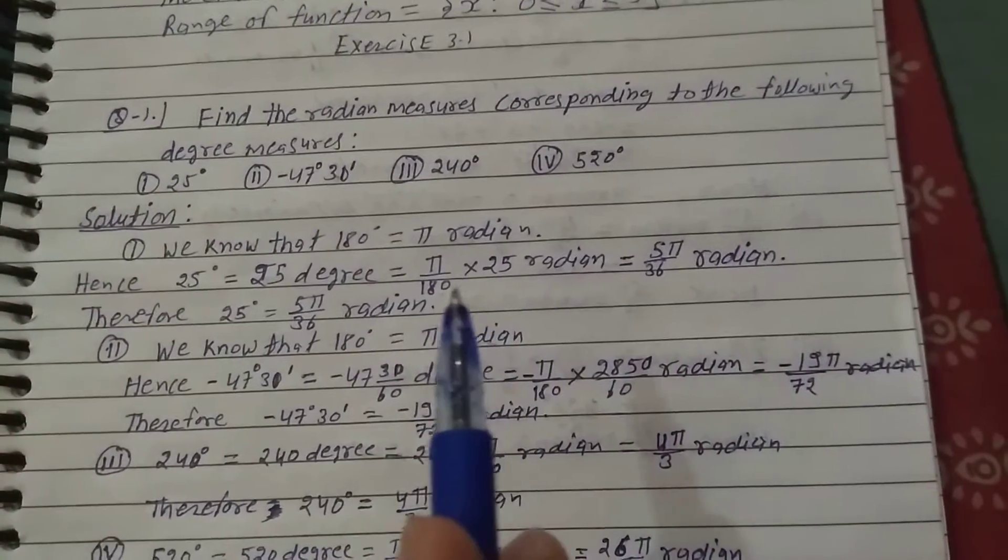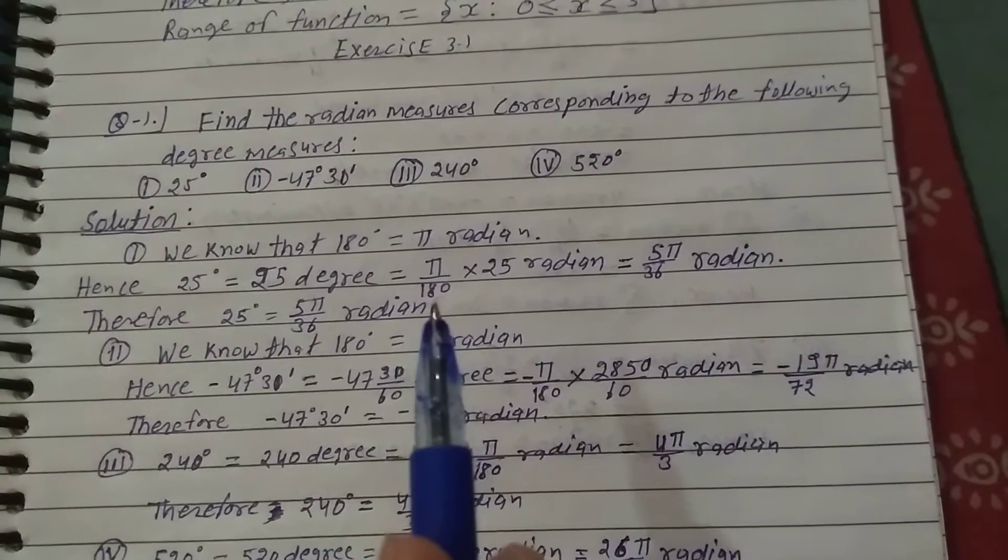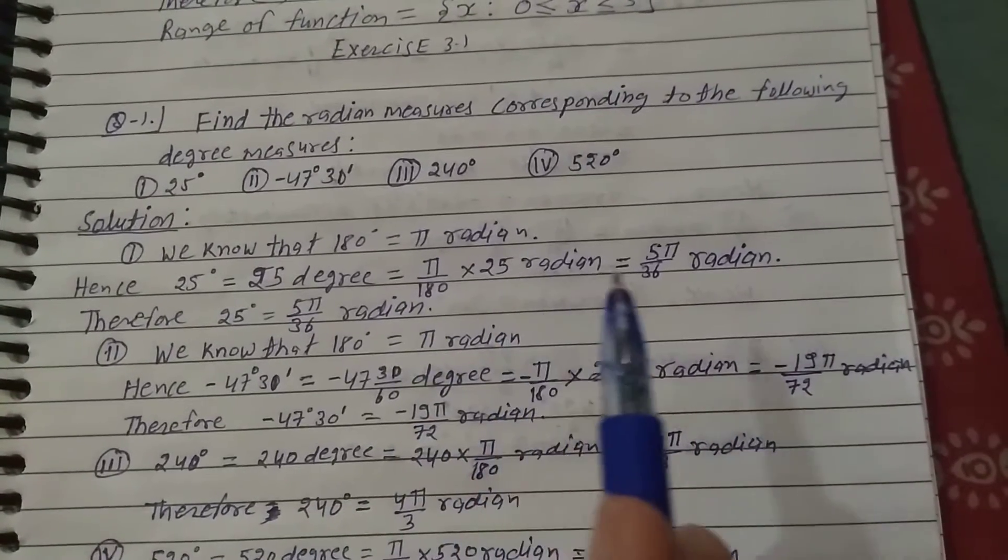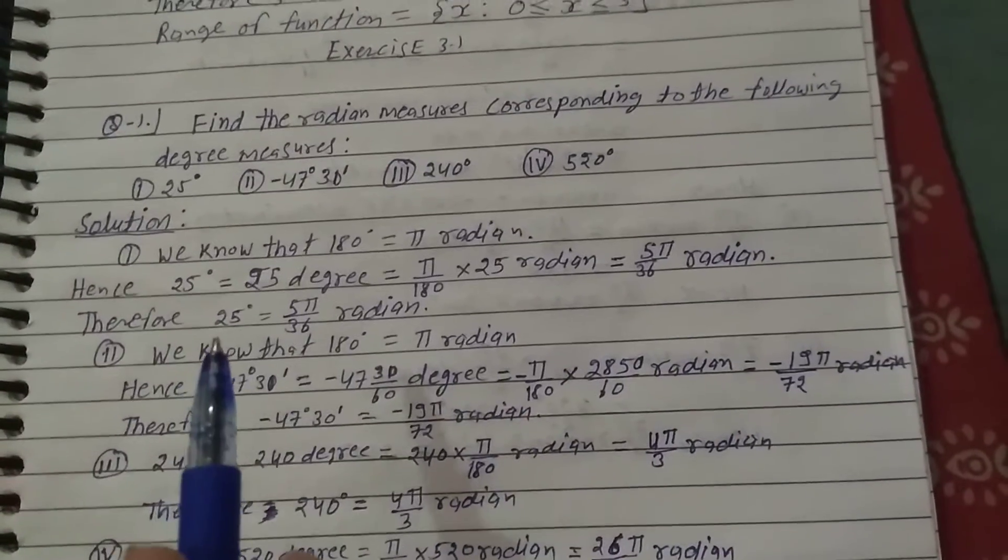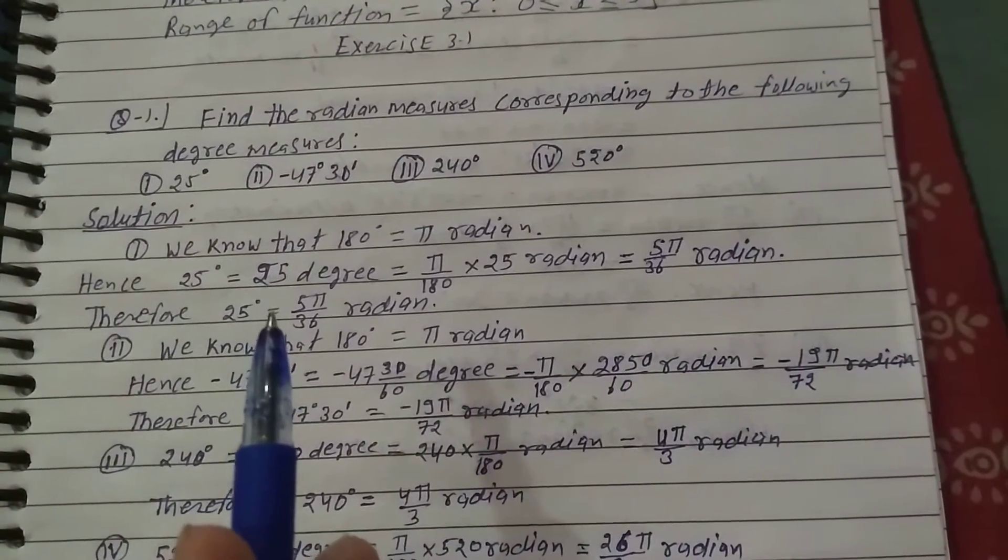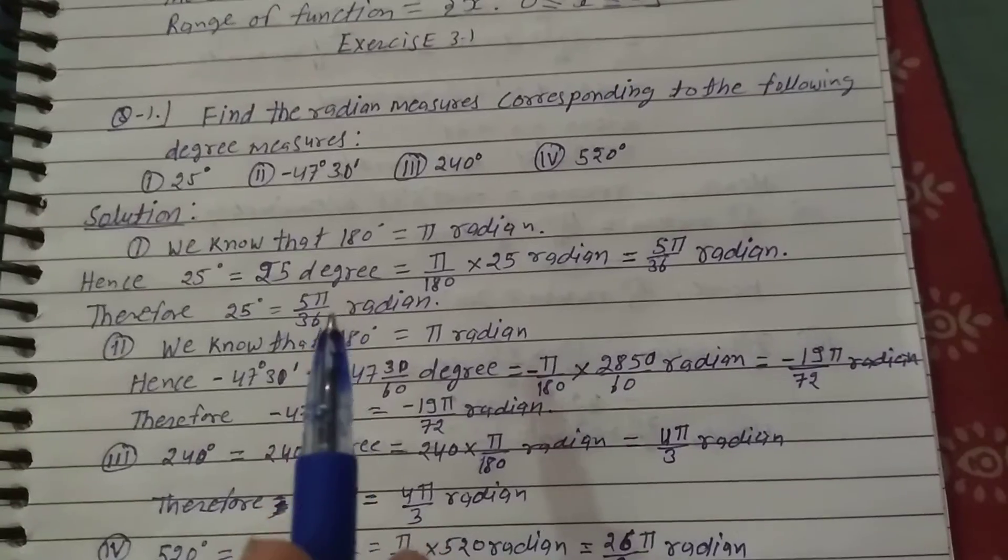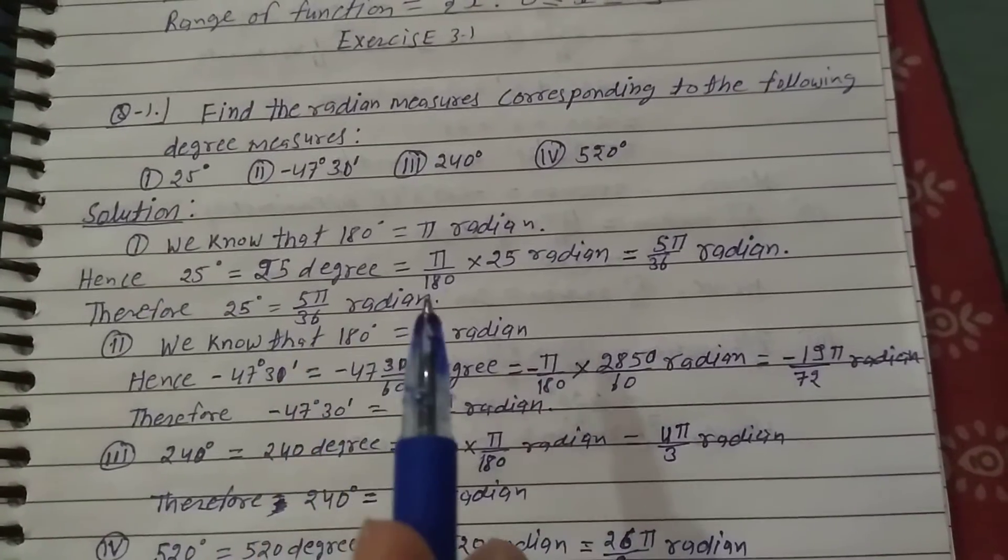Because 5 divides both numerator and denominator, we simplify to this form. Therefore, 25 degrees equals 5π/36 radians.